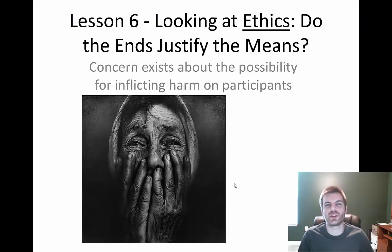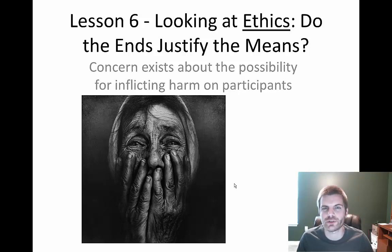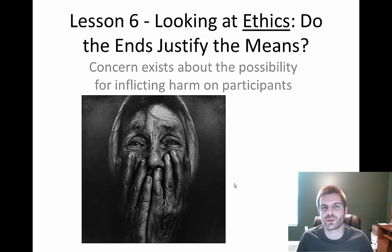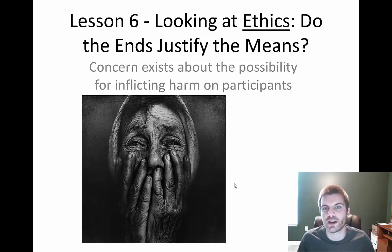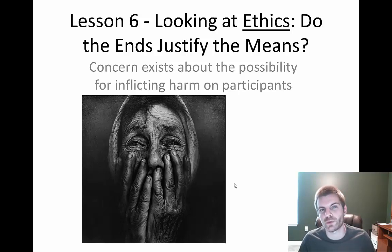Welcome back to another AP Psychology course video. This is lesson number six on the ethics of psychological research. This video is going to look at both animal research and human research and some of the conditions set forth to guide psychologists in deciding whether they are making the right choices for an experiment, whether they are following the conditions set forth by the APA or the IRB, which is the review board for a particular university.